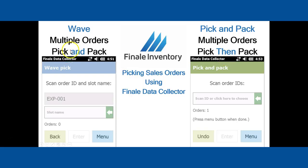With wave, you're picking and packing multiple orders at the same time. Pick and pack works similarly to wave, but it separates the pick process from the packing process.